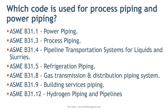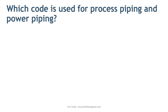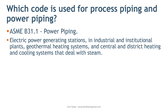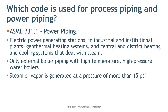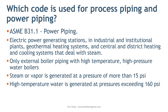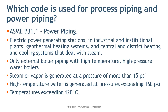Out of this list, power piping and process piping are very important if you are working in oil and gas and energy industries. ASME B31.1 power piping covers piping typically found in electrical power generating stations, industrial and institutional plants, geothermal heating systems, and central and district heating and cooling systems that deal with steam. This code covers external boiler piping with high-temperature, high-pressure water boilers where steam or vapor is generated at pressure more than 15 psi, and high-temperature water generated at pressure exceeding 160 psi and/or temperature exceeding 120 degrees.